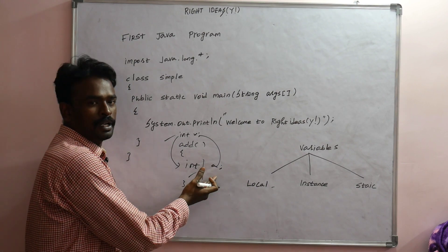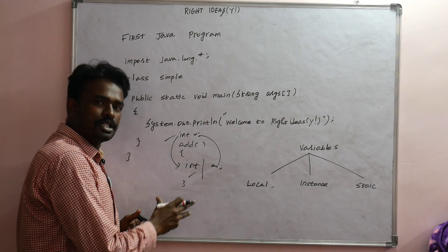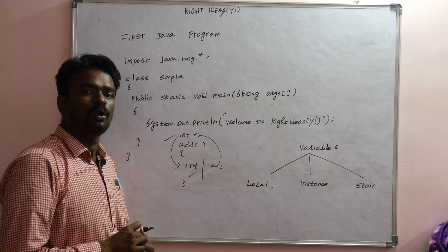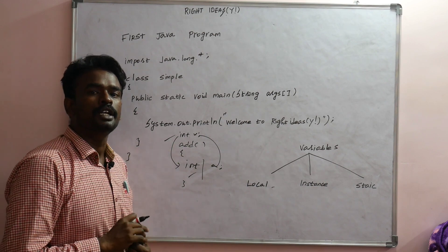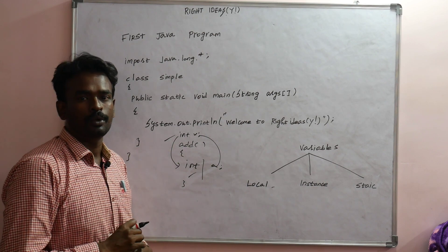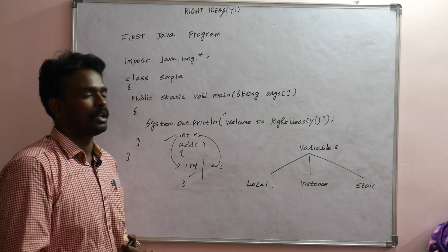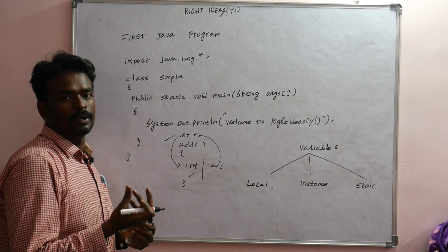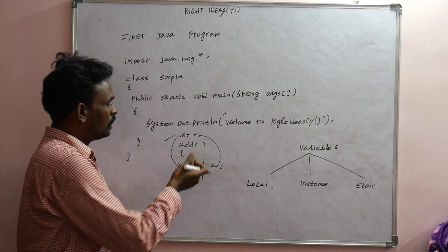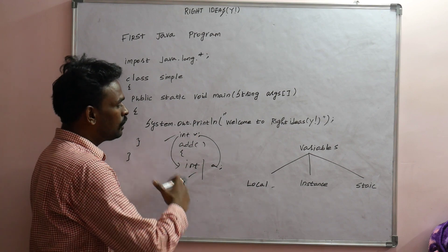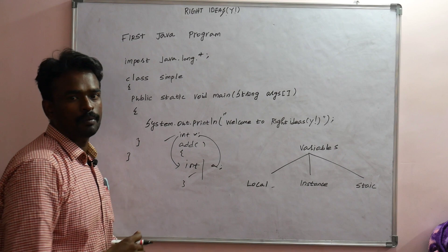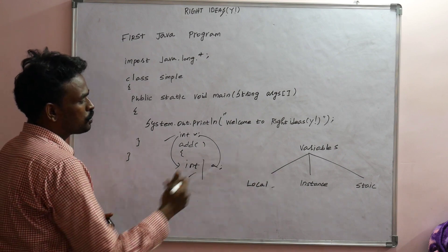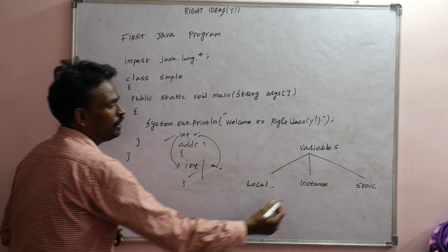A local variable is created inside a function and can only be used within that function. An instance variable is created outside the function and can be accessed anywhere inside the class. The next type is static variable.